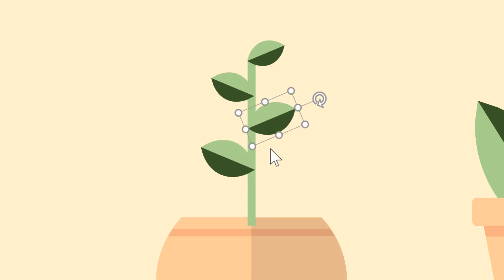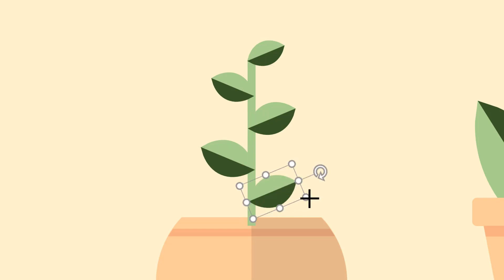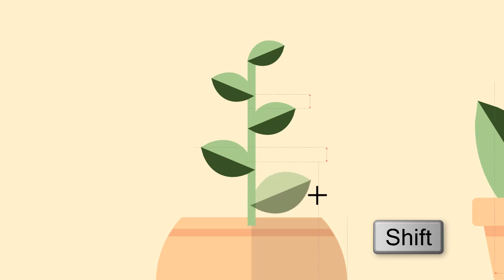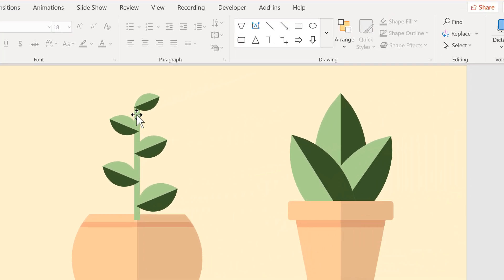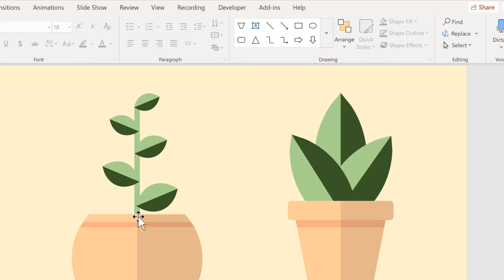Hold down Ctrl while dragging the shape down one more time, then hold down Shift while making it bigger to lock the aspect ratio. Then select the stem and send it to the back so the bottom of the stem is hidden behind the plant pot.